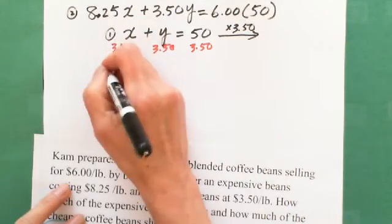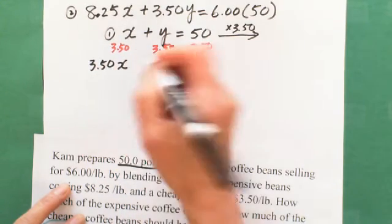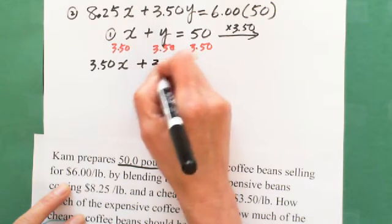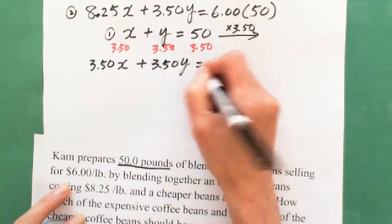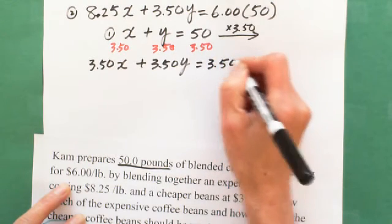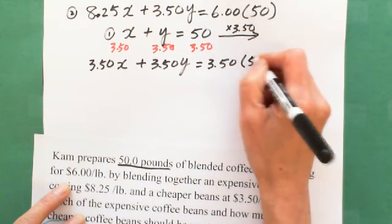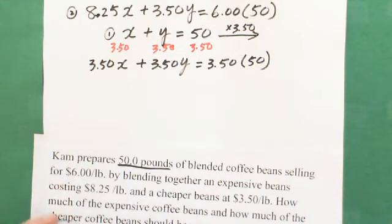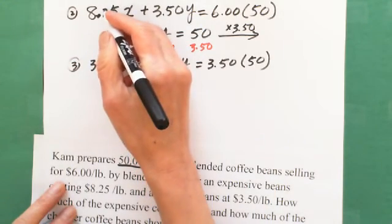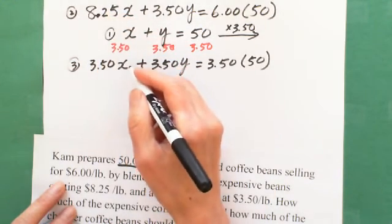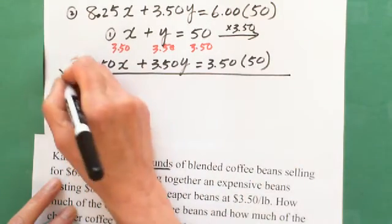Then I have the equation, you have the third equation. You got 3.50X plus 3.50Y equals 3.50 times 50. The third equation.